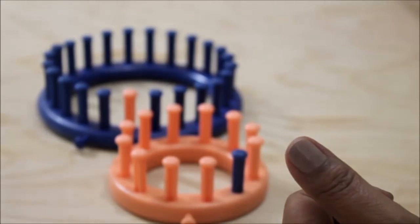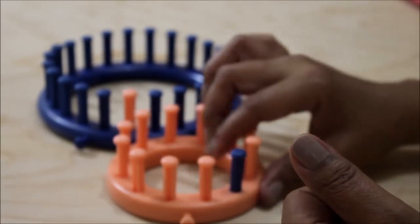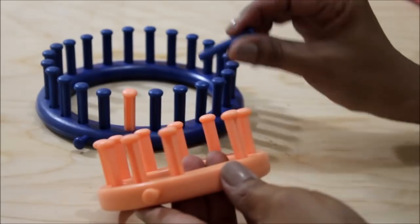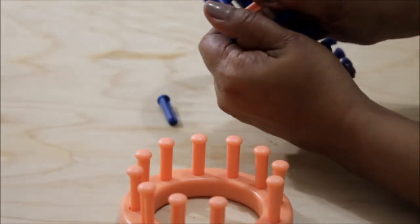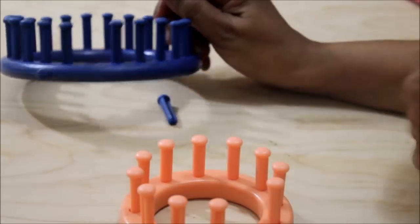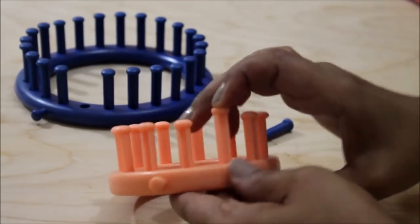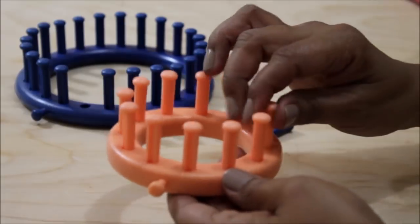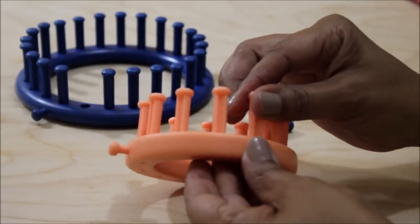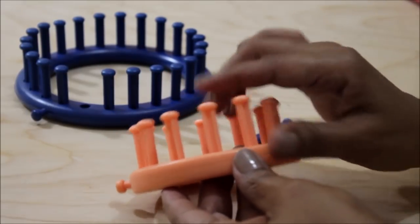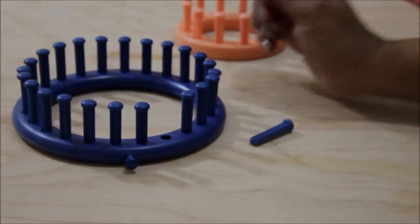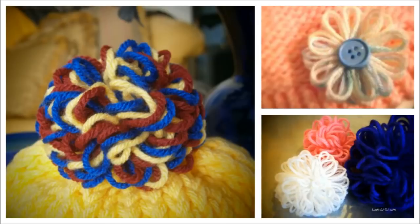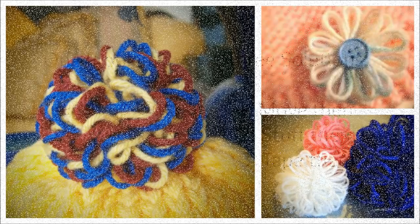Now with the flower loom specifically and with the blue loom as well depending on the project, you actually need these pegs to come out. And a lot of you have made the flower that's made on the flower loom. But I want you to know that the same technique that I use to make the flower loom, I use to make my pom-poms and my scrubbies. It's the same technique. I need the pegs to come out.